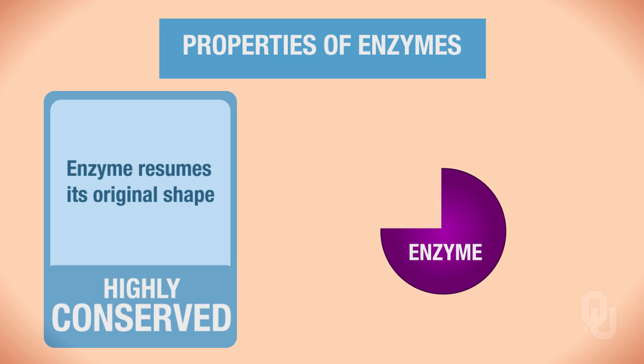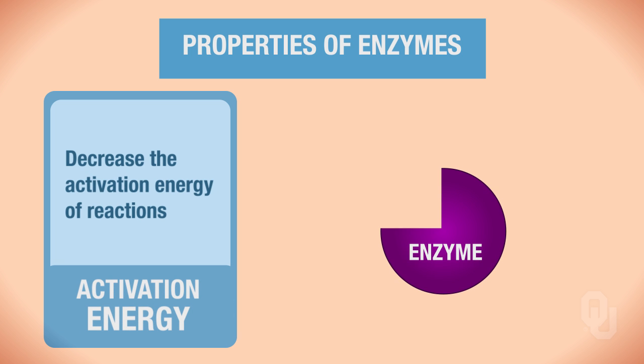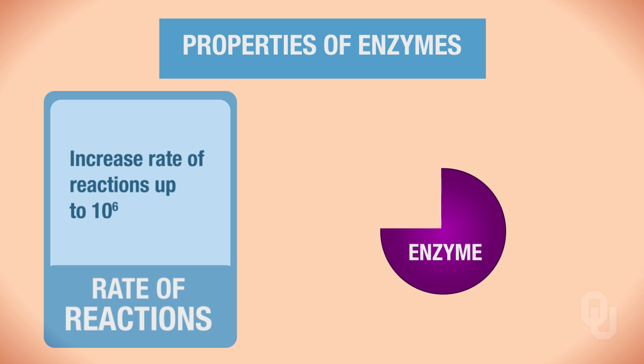Another property of enzymes is that they decrease the activation energy of reactions, which is what we discussed in the previous video. Thirdly, enzymes are going to increase the rate of the reactions up to ten to the sixth times. So that's remarkably faster. Reactions occur remarkably faster with enzymes than they would without.